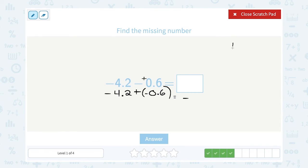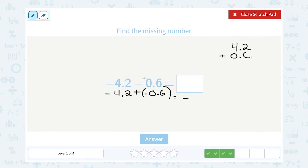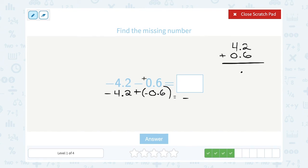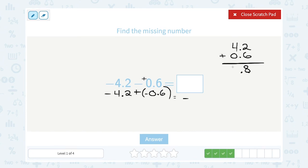So I'm going to say, okay, 4.2 plus 0.6. Okay, well, if you line up your decimal points, in the tenths place, 2 plus 6 gives me 8. And in the ones place, 4 plus 0 is 4.